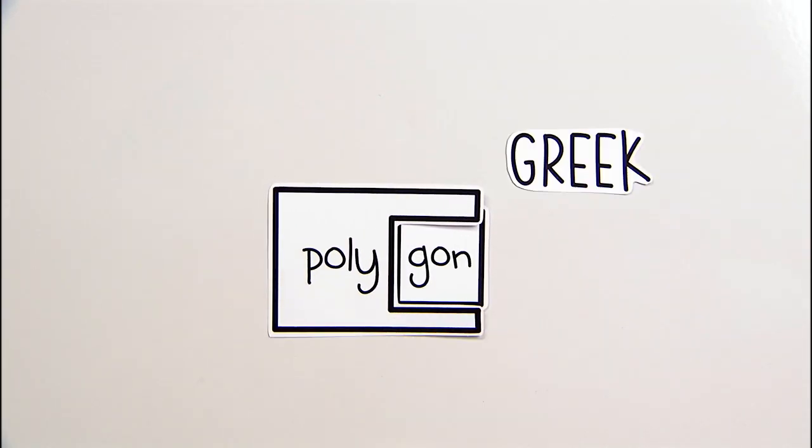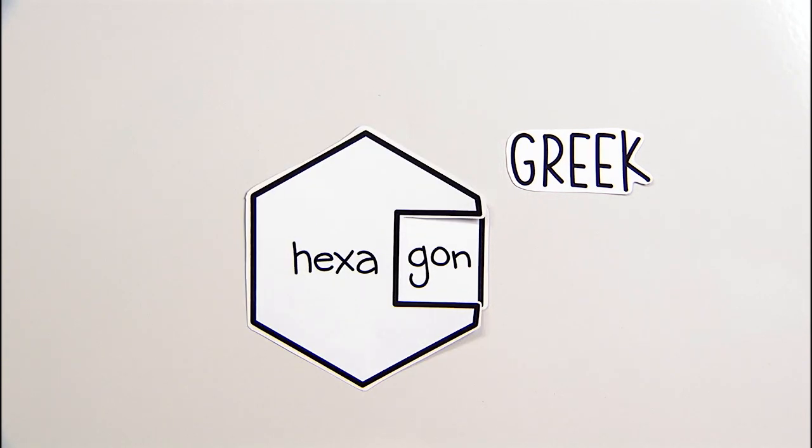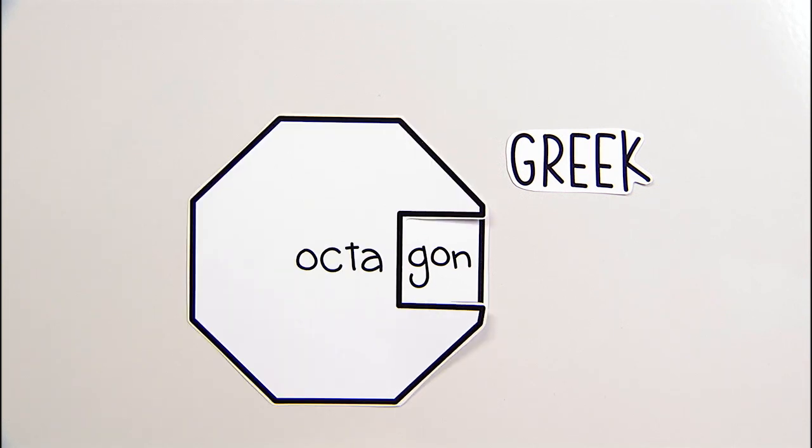Polygon is a Greek word for many angles. It's why we use Greek prefixes with gon: pentagon, hexagon, heptagon, octagon, decagon.